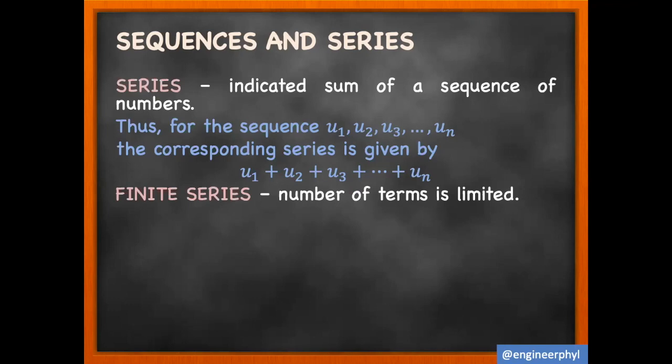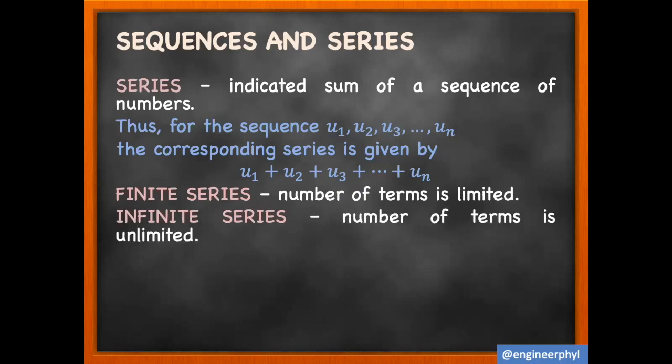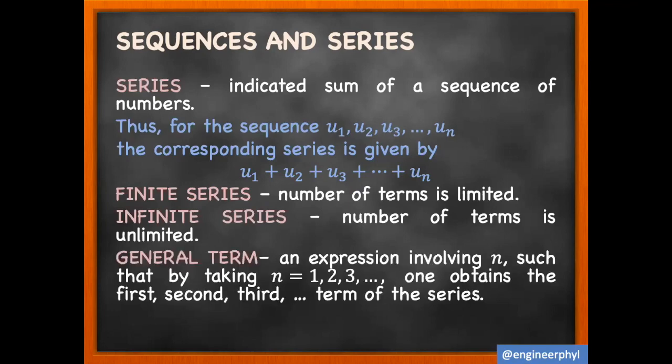A finite series is a series in which the number of terms is limited. An infinite series is a series in which the number of terms is unlimited. The general term of a series is an expression involving n such that by taking n equal to 1, 2, 3, one obtains the first, second, third, etc., term of the series.